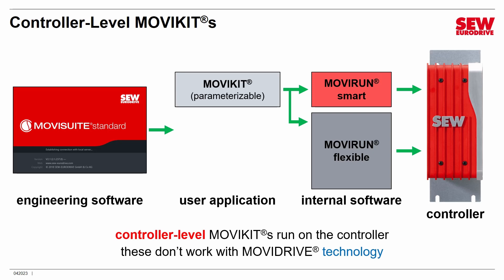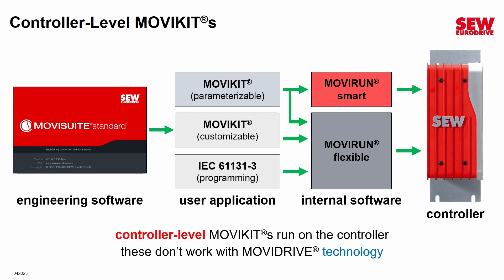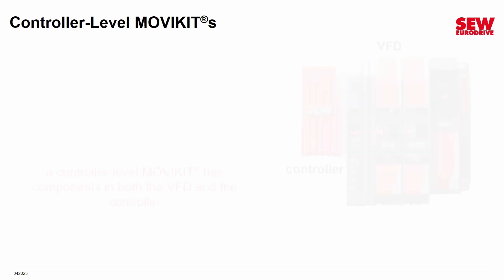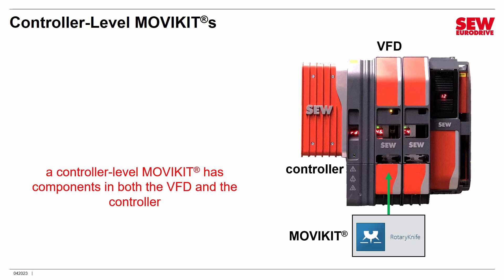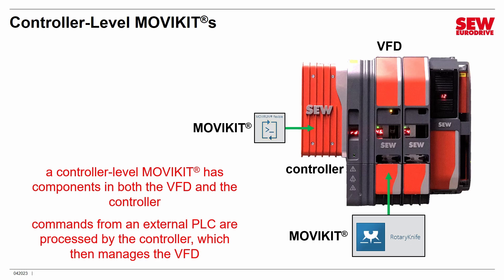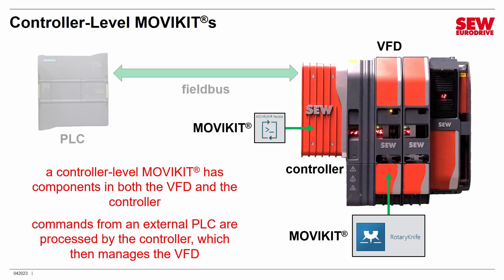Besides standard parameterizable kits, there are also customizable MoVC kits and completely custom IEC 61131-3 PLC-type programming, though those are advanced topics not covered in this class. A controller level MoVC kit has two components: one that lives in the VFD or access module and one that lives in the controller itself. Commands from an external PLC are processed by the controller, which manages the VFD — doing the heavy lifting while the PLC just sends a few basic commands.